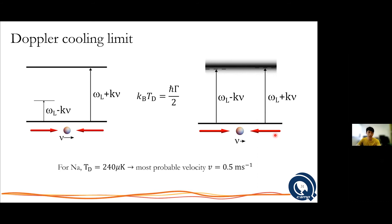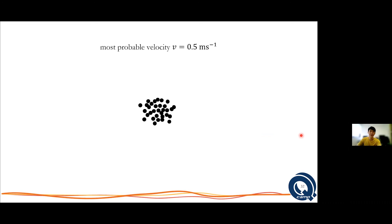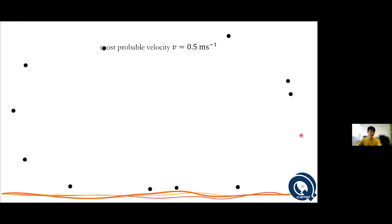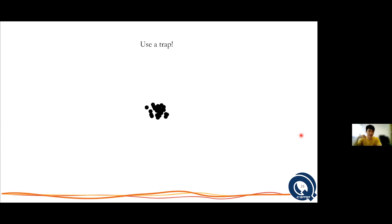The Doppler limit for sodium is something on the order of 240 µK — very cold already — translating to a probable velocity of about half a meter per second. But since velocity is not zero, given enough time the atoms will all drift away. So what can you do if you want to keep them there? You would have to use a trap — you want them cold, but you also want them to remain at the same place. Trapping ideas will be the topic of the next section.